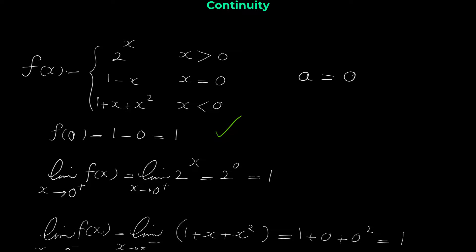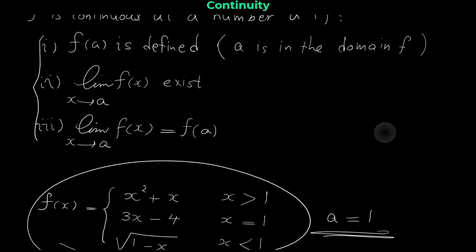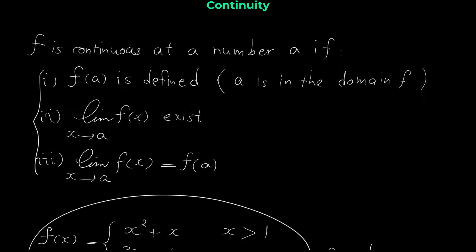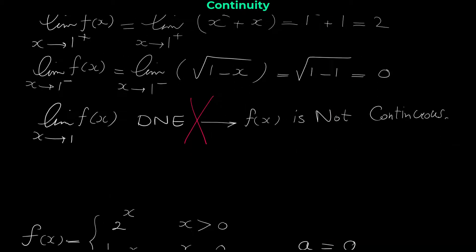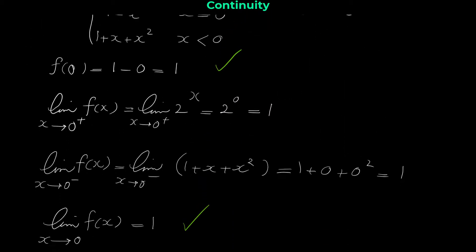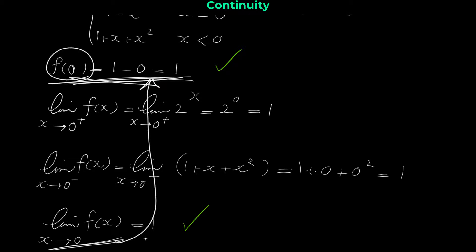This function has now passed two conditions for continuity. The third condition is that the limit of f of x when x approaches a should equal f of a. We found that the limit as x approaches 0 is 1, and f of 0 is also 1. Since they are equal, the third condition of continuity is also satisfied.